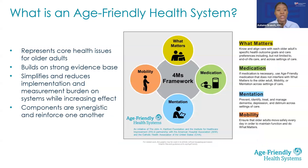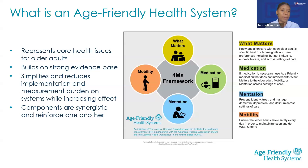So what is an age-friendly health system? Many of you in the chat have already shared what we call the 4Ms. The 4Ms is a set of evidence-based practices that outline how care for older adults should be approached. The 4Ms are: what matters to the older adult, medication, mentation, and mobility. We like to think of what matters as the core or foundation of the 4Ms, because what matters to that older adult should inform the medications they're given, how we approach mentation, and also getting them up and going when we think about mobility. The goal is to make sure they are working together as a set and not just as individual elements.